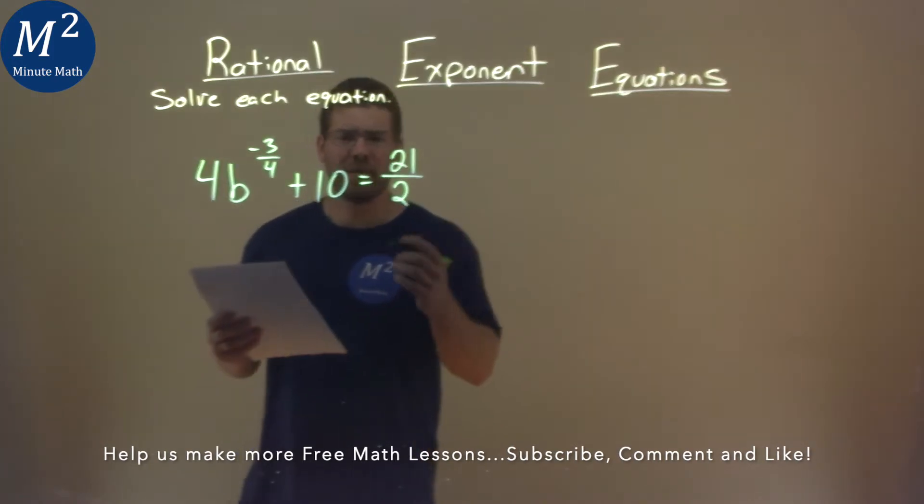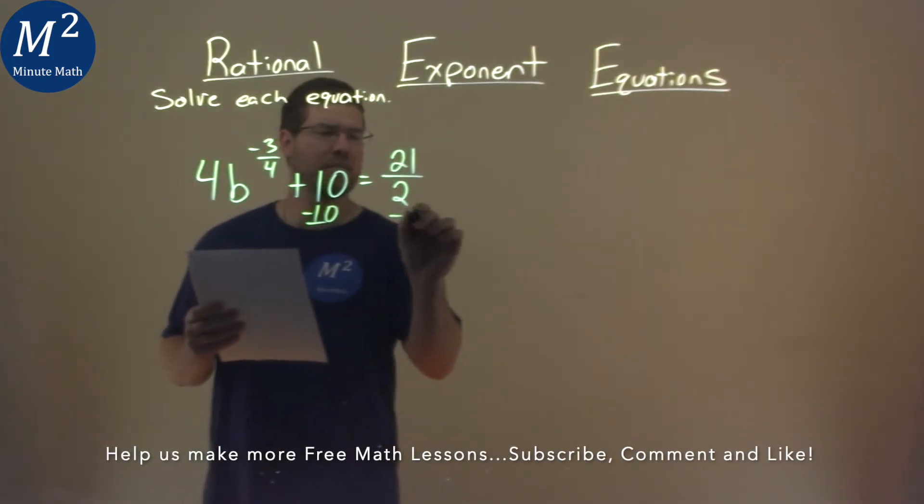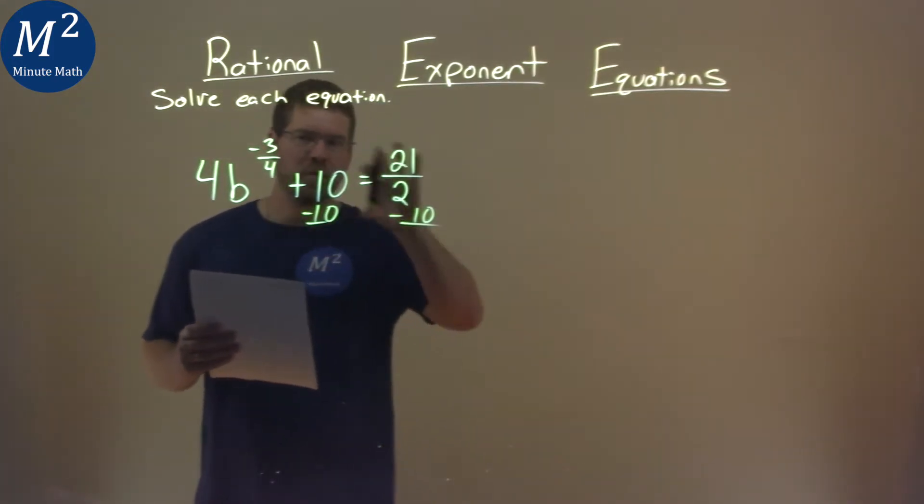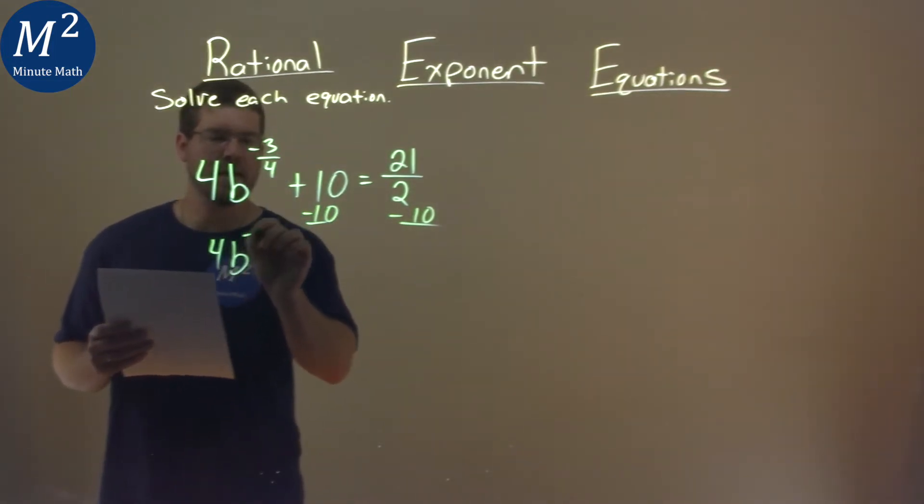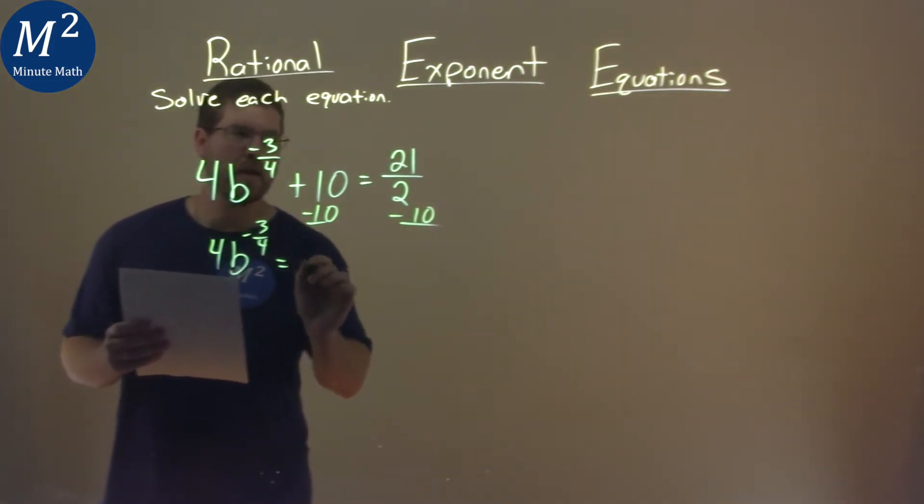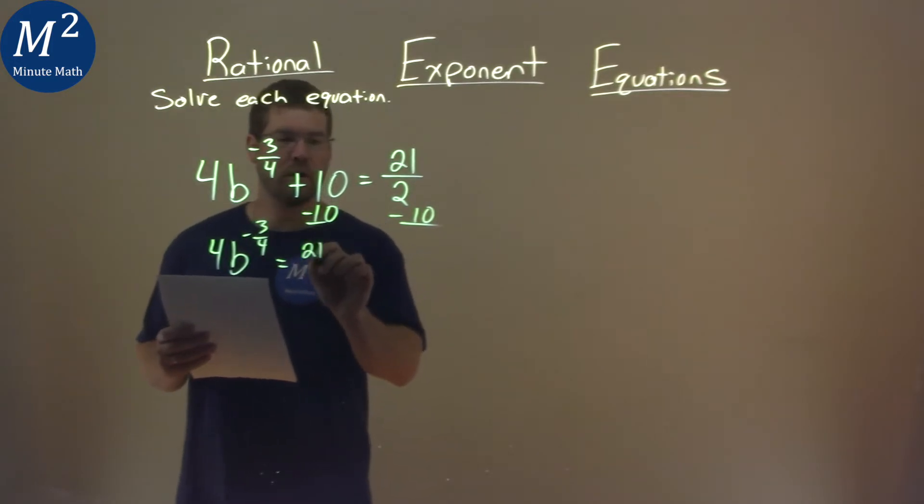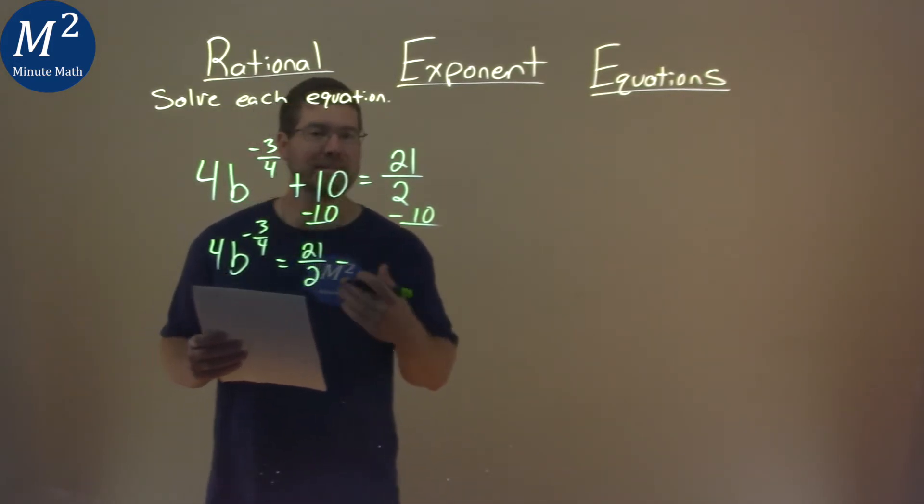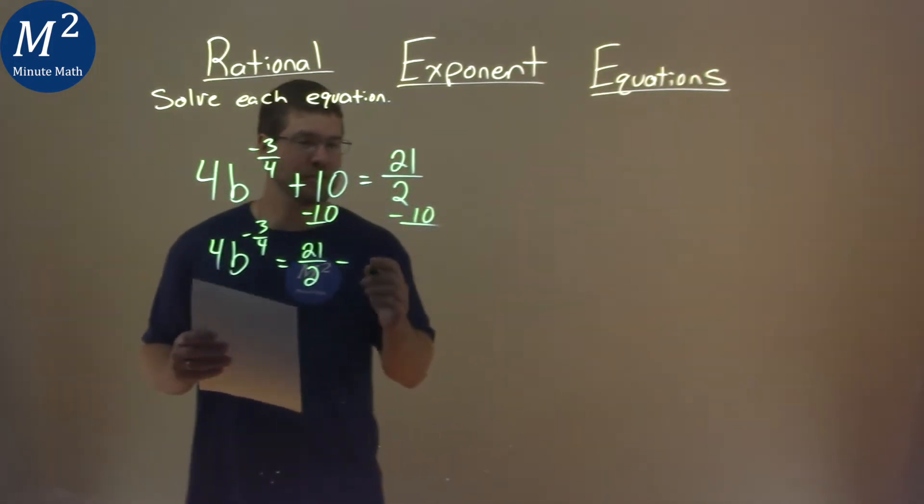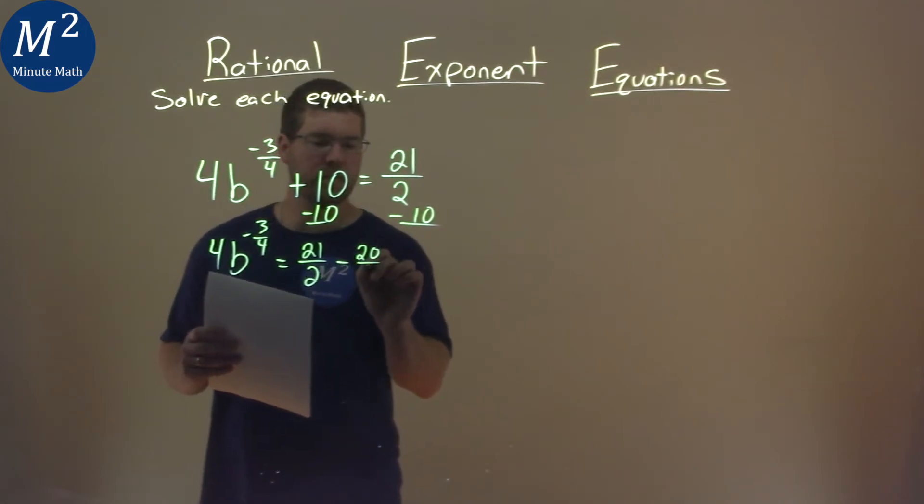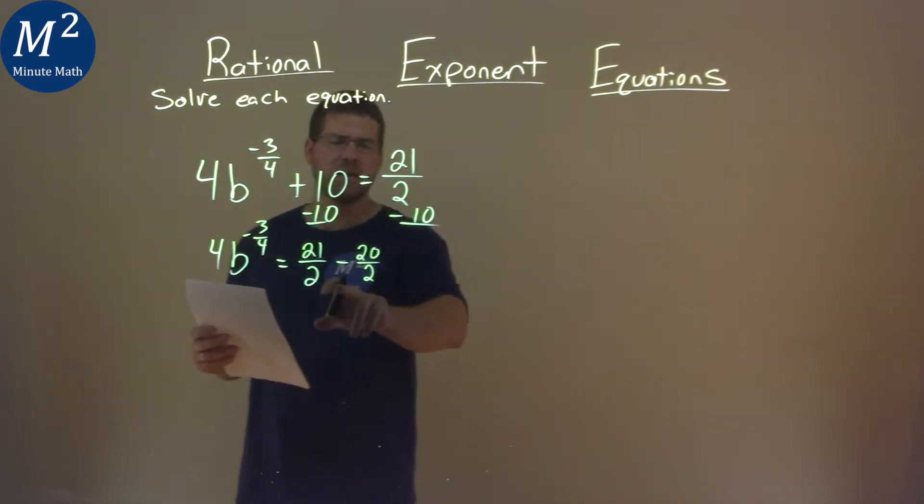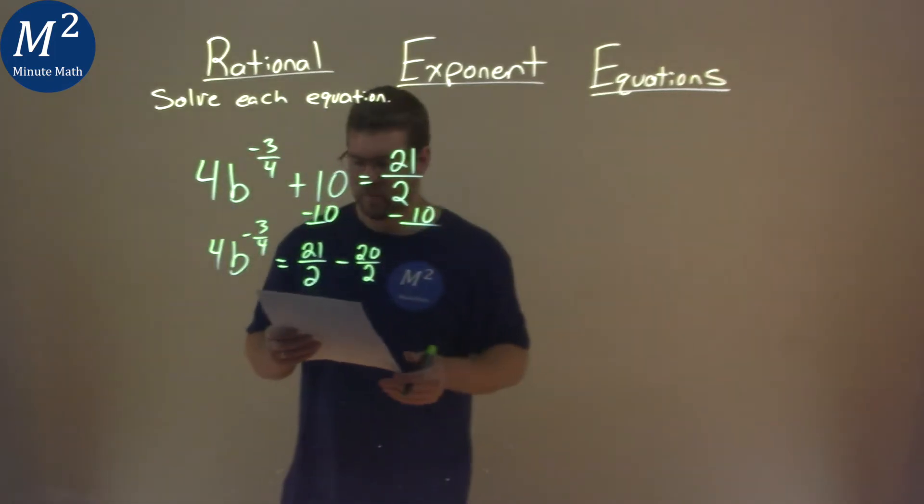The first thing is I'm going to subtract 10 from both sides. Get that over there, we're trying to get b by itself. So we have 4b to the negative 3 fourths power, and that's equal to 21 over 2 minus 10. And 10 as a fraction is the same thing as 20 over 2. I did that so I have the same base, makes it easier to subtract here.